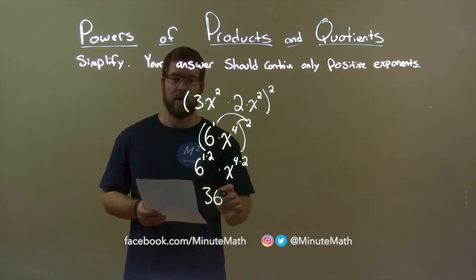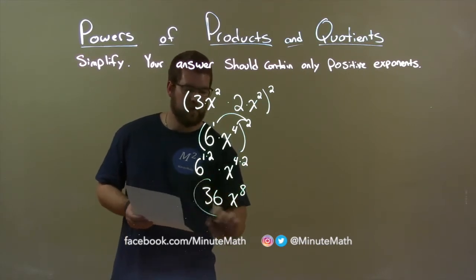4 times 2 is 8. And, we have x to the eighth power, giving us our final answer, 36x to the eighth power.